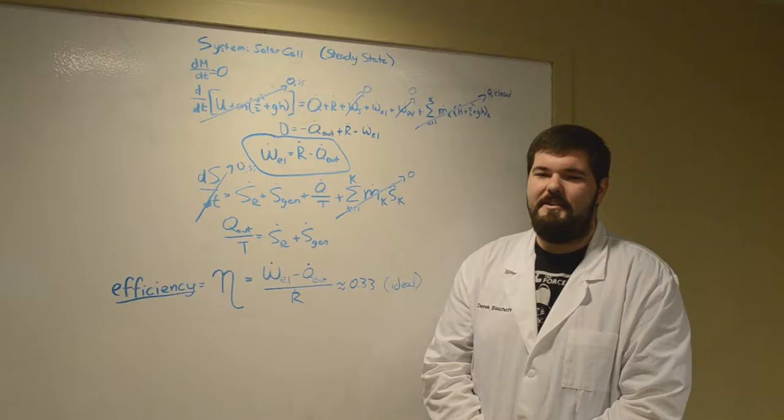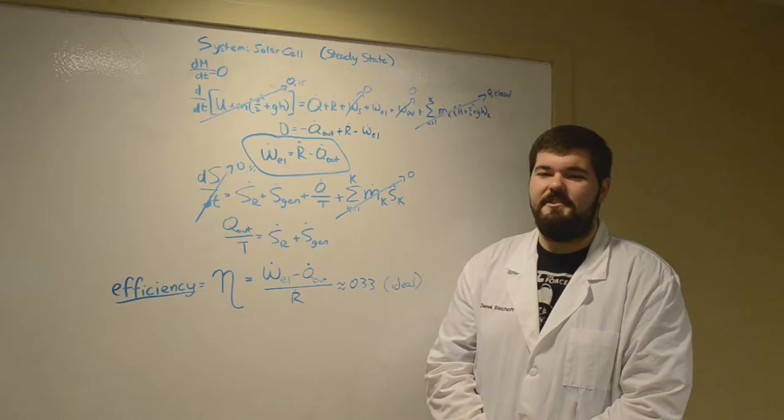This can be shown through the use of thermodynamics. We can simplify the energy balance to show that the light from the sun is converted to electric work and heat.